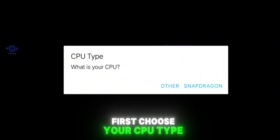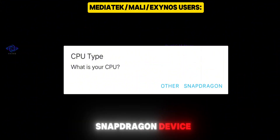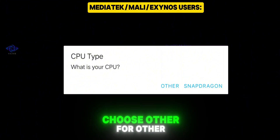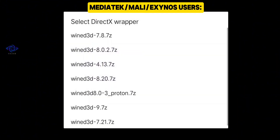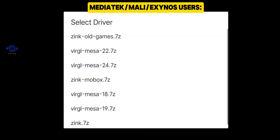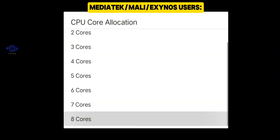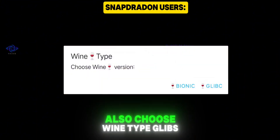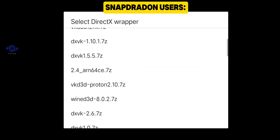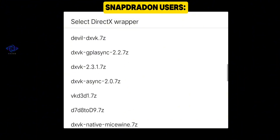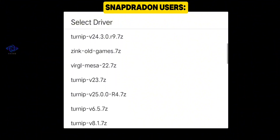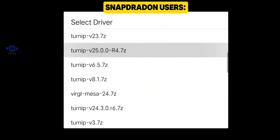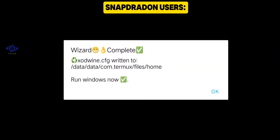Now we'll go through the Setup Wizard. First, choose your CPU type. If you're using a Snapdragon device, select Snapdragon. If not, choose Other. For non-Snapdragon users, pick Wine Type as Glibc, DirectX Wrapper as Wine3D9, Driver as Virgil Mesa19, and allocate 8 CPU cores. For Snapdragon users, also choose Wine Type Glibc, but select DXVK 2.3.1 as your DirectX Wrapper and Turnip V25.0.0 R4 as the driver. Again, set 8 CPU cores.